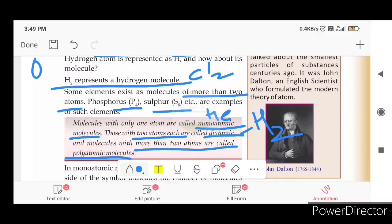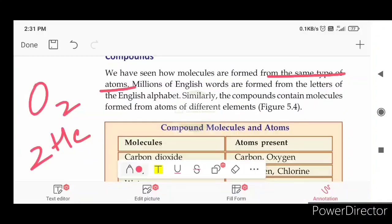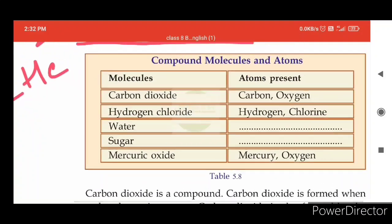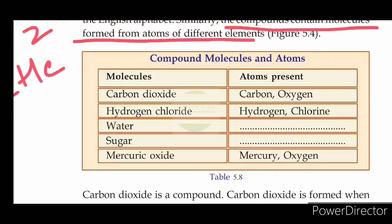Phosphorus and sulfur are examples of polyatomic molecules. The compounds contain molecules formed from atoms of different elements. For example, carbon dioxide — the molecules are formed from different elements combined.